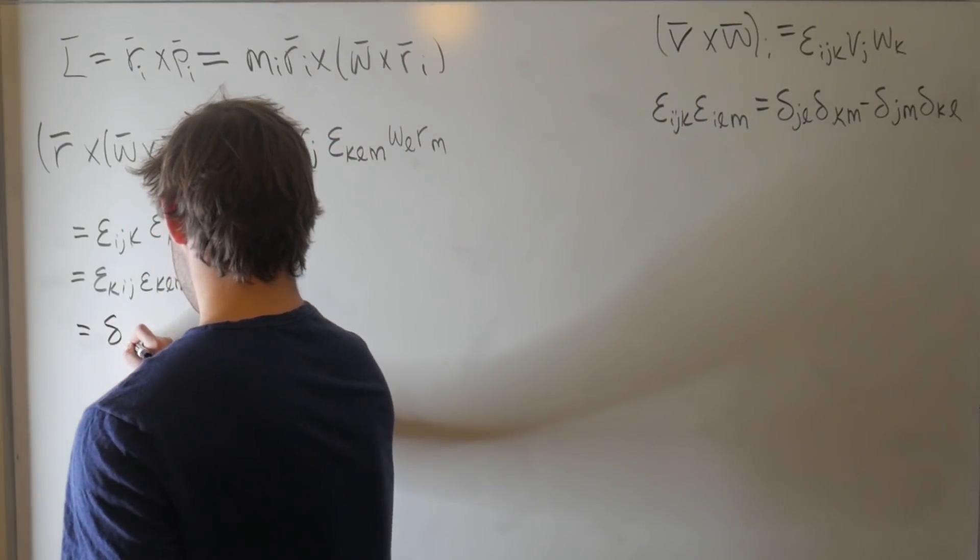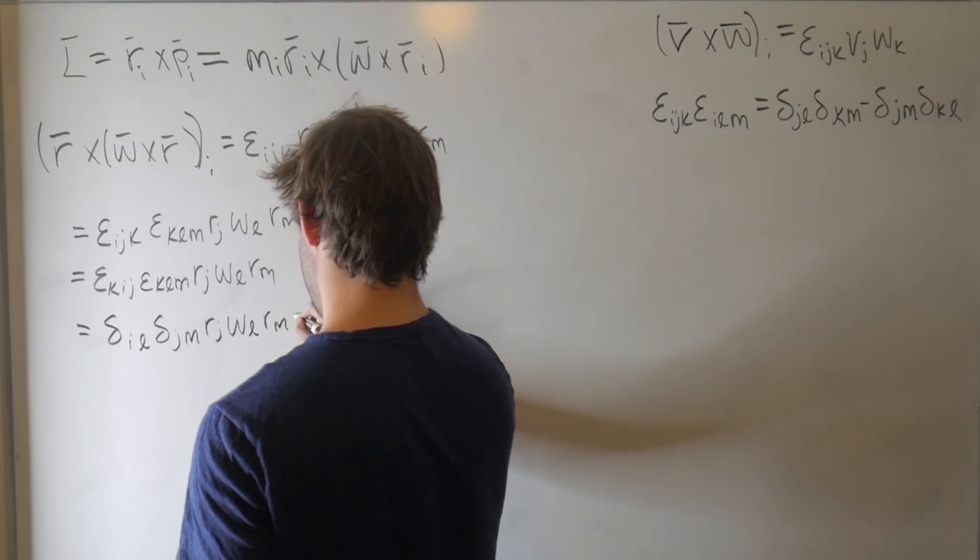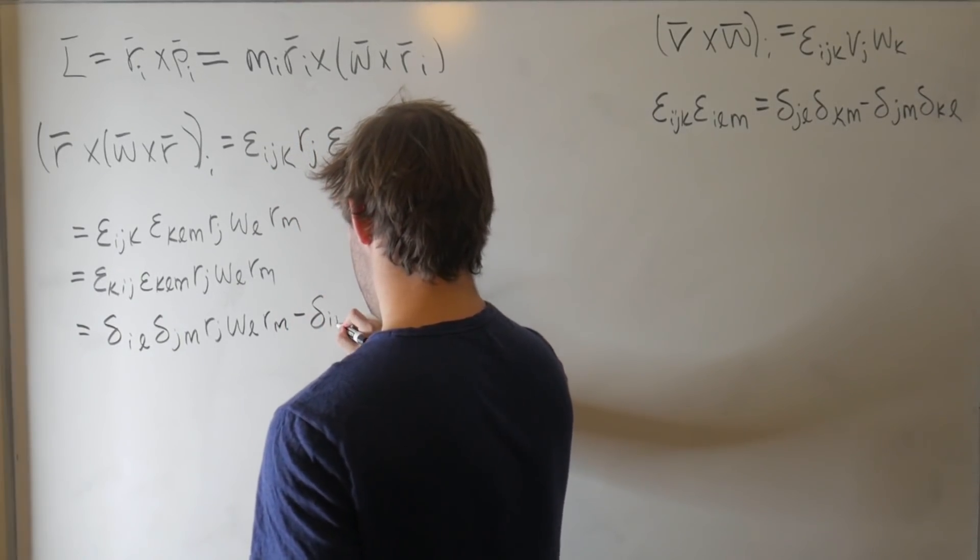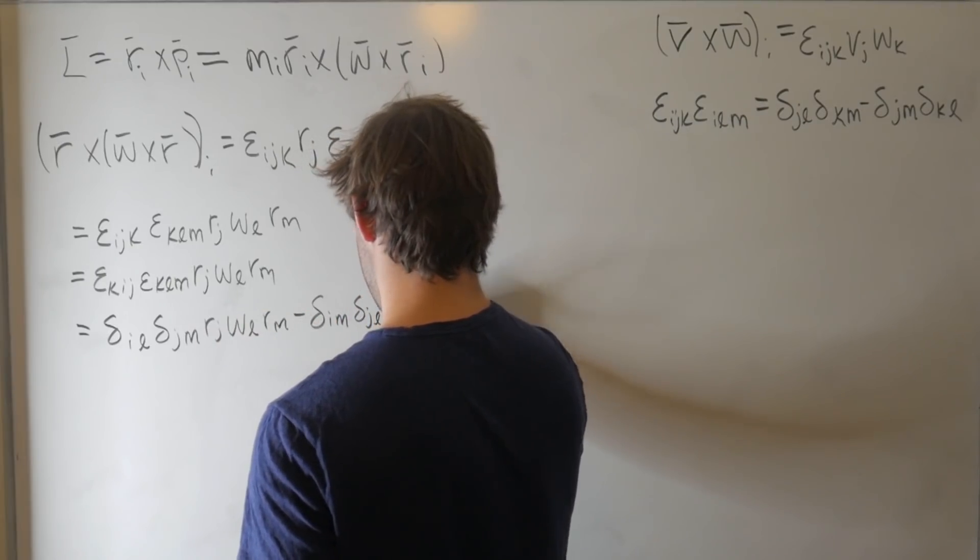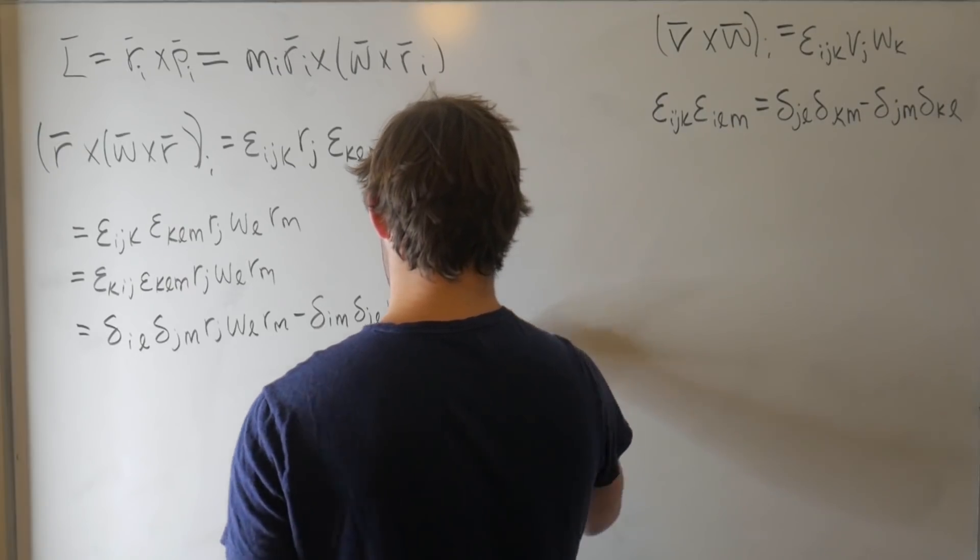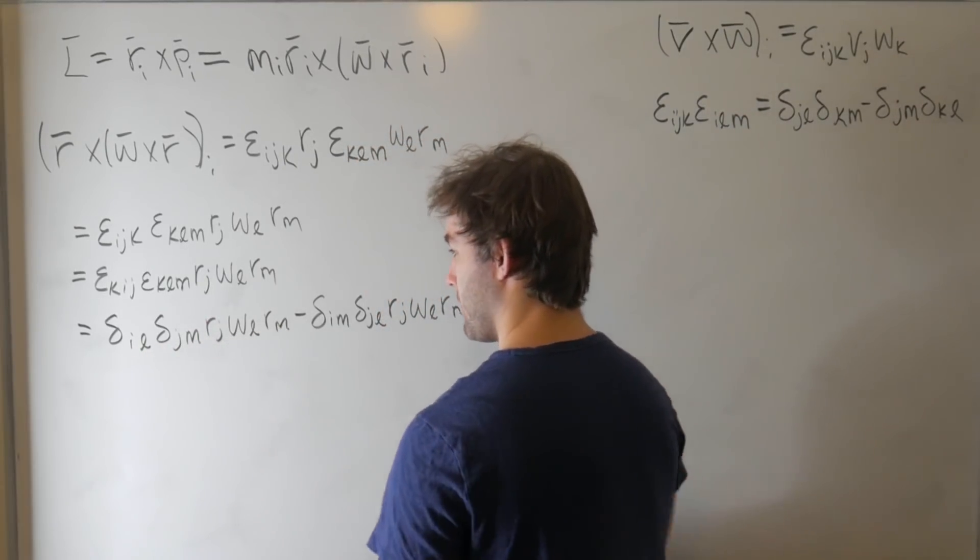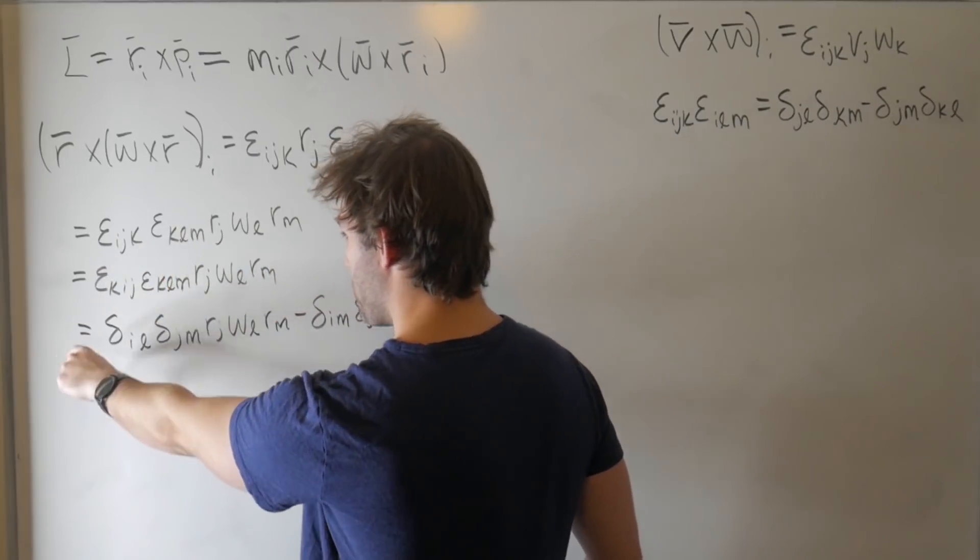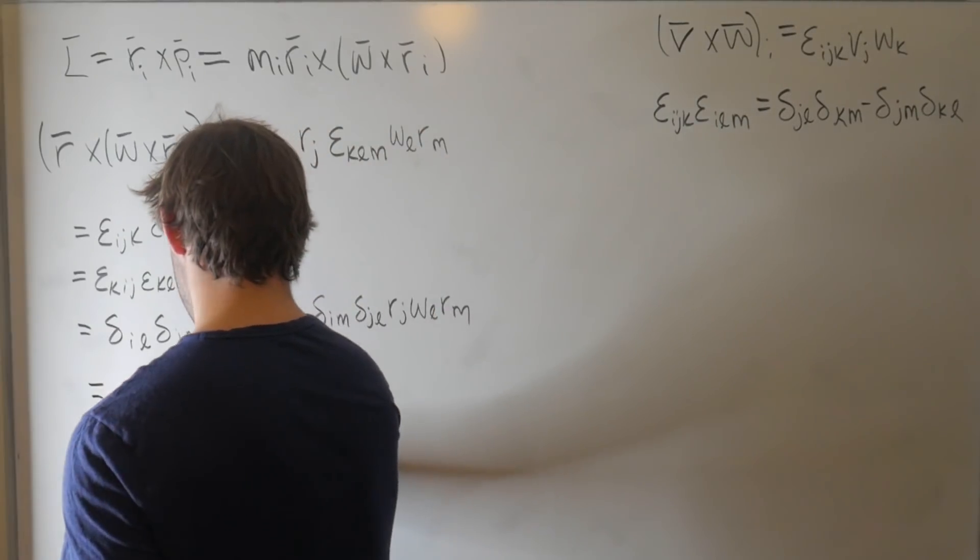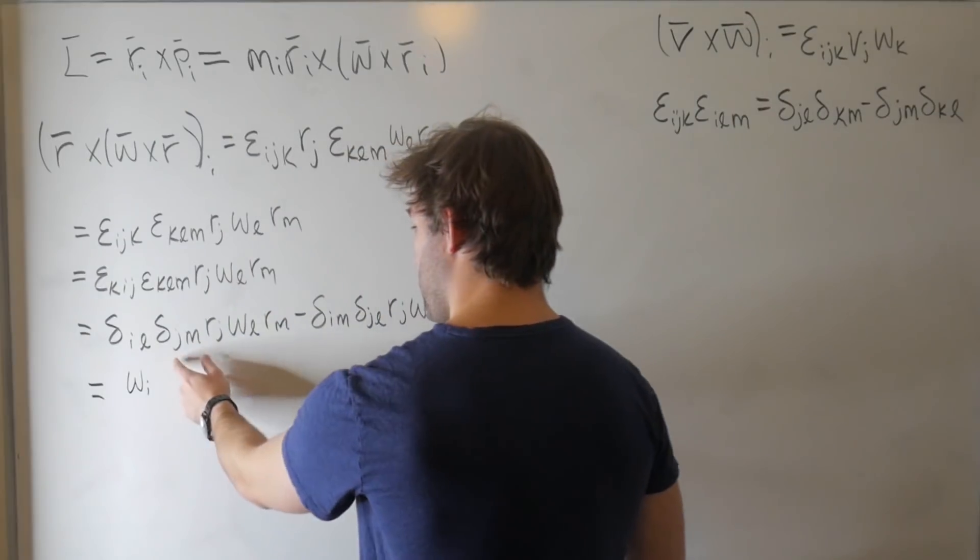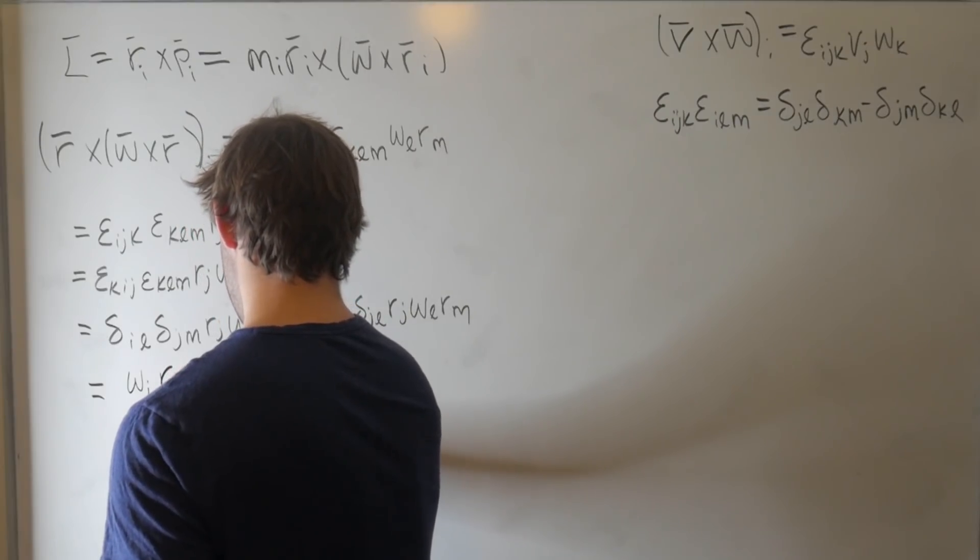So let's go ahead and expand this. This is just delta_il delta_jm r_j omega_l r_m minus delta_im delta_jl. Now, if we look at this, we're saying that l has to equal i, j has to equal m. So let's go ahead and substitute this stuff in. We're looking for the i-th component, so we're going to keep i. So this is just equal, if l equals i, then this l index is now going to be an i. So that's an omega_i. And that j equals m, so we've got an r_j and an r_m. We'll call those both j's now. r_j r_j.